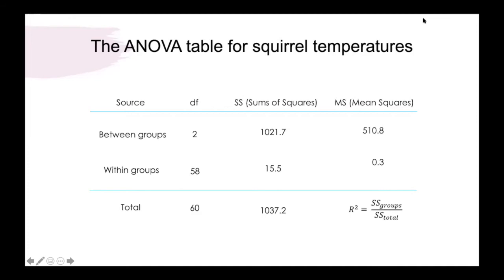In the case of our ground squirrel example where we had differences in body temperature among ground squirrels exposed to one of three different ambient temperature treatments, we can calculate the R-squared of this analysis by taking the proportion of total variation that is explained by variation among groups.